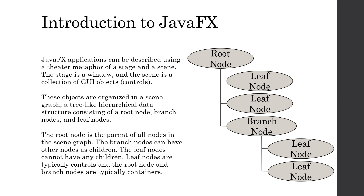That root node will be your top-level container. You'll also have branch nodes and leaf nodes. The root node is the parent of all nodes in the scene graph — it's the top-level container. The branch nodes describe other containers — additional nodes that can have other nodes as children. The leaf nodes are going to be anything that cannot have any children.